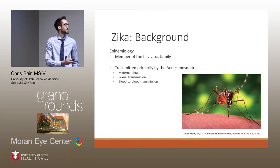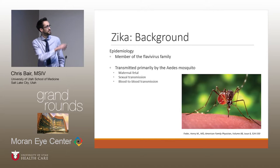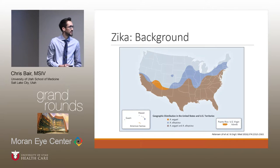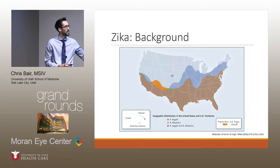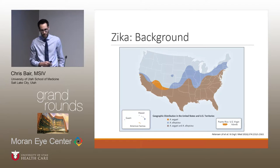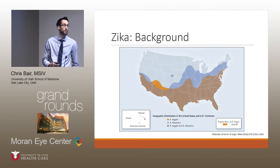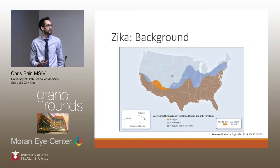A little bit of background. Zika is a member of the flavivirus family, which also includes pathogens such as dengue fever, West Nile virus, and chikungunya. It's transmitted primarily by the Aedes mosquito, and this is a map of its presence in the United States. While mosquito transmission is the most prevalent form, it can also be transmitted from mother to fetus in utero, and it can also be transmitted sexually, from both men and women.